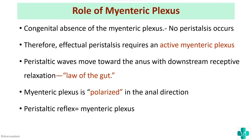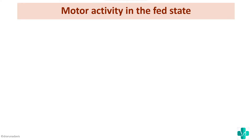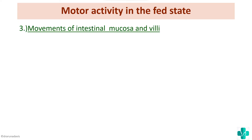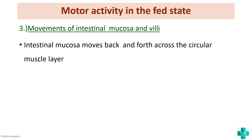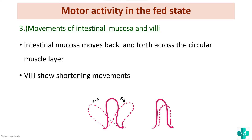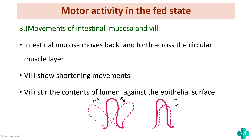The next type of movement in the fed state is movement of the intestinal mucosa and villi. The intestinal mucosa moves back and forth across the circular muscle layer for proper mixing of the intestinal juice with the chyme. The villi also show shortening movements and swaying, which stirs the luminal contents against the epithelial surface. All these movements help in proper mixing of the intestinal contents.